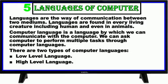Languages are the way of communication between two mediums. Languages are found in every living creature, including humans and even in animals. Computer language is a language by which we can communicate with the computer. We can ask the computer to perform multiple tasks through computer languages. There are two types of computer language: low-level language and high-level language.